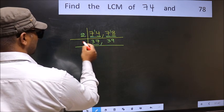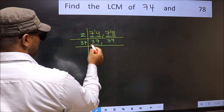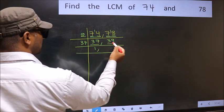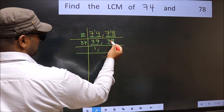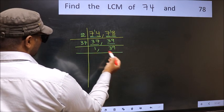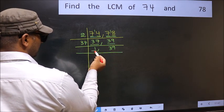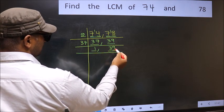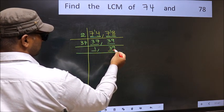Now we have 37. 37 is the prime number, so 37, 1 is 37. The other number 39, not divisible by 37, so you write it down as it is. Now we got 1 here. So focus on the next number 39. Last digit 9, not even, so not divisible by 2.